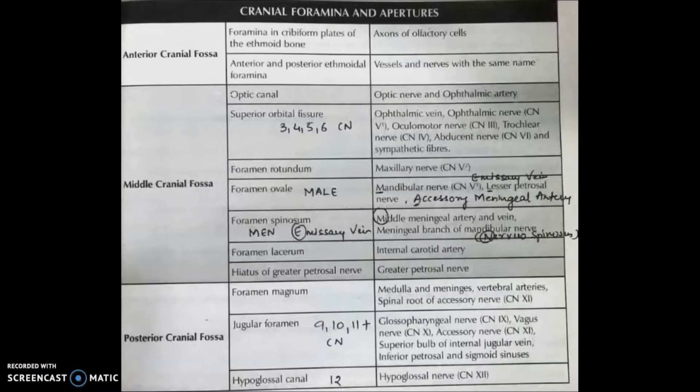So dear MDS experts, now we will study about the cranial foraminas and their apertures. This we have studied during our initial MDS days but we tend to forget. Why? Because we don't study in a stepwise manner; we study directly the foraminas and the structures that pass through. But we should know that cranial fossa is divided in three parts: anterior, middle, and posterior.